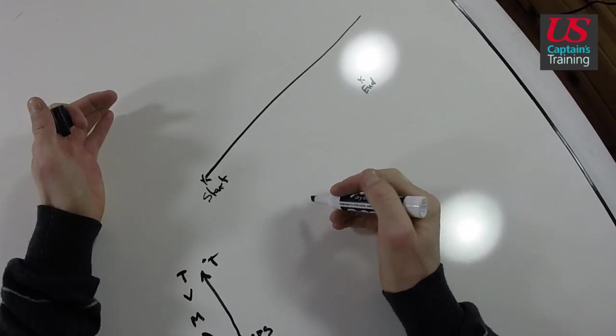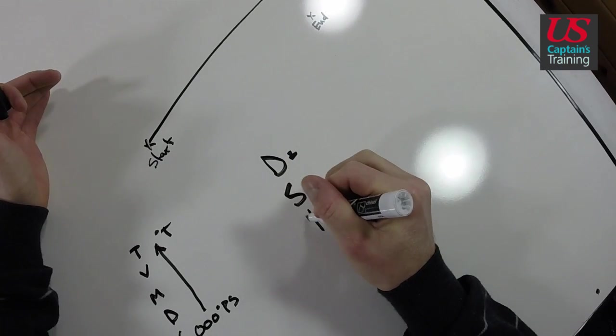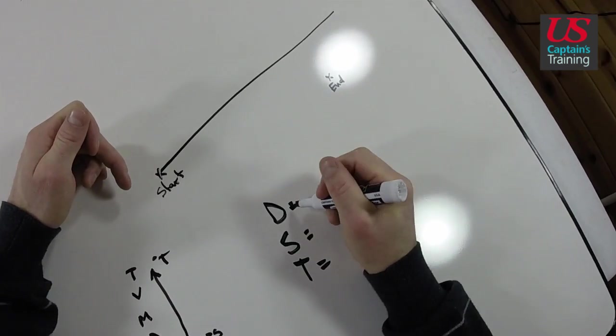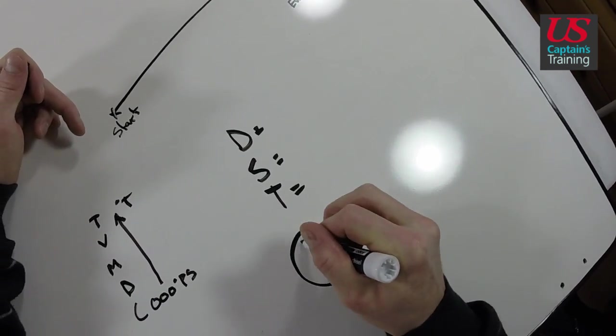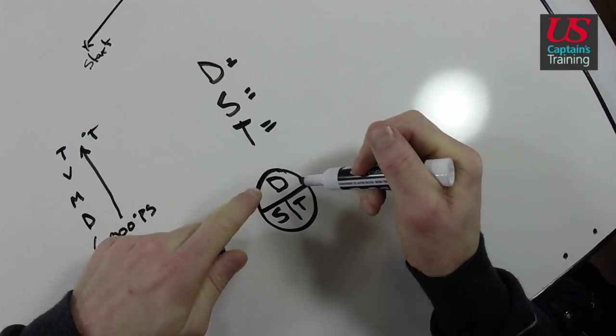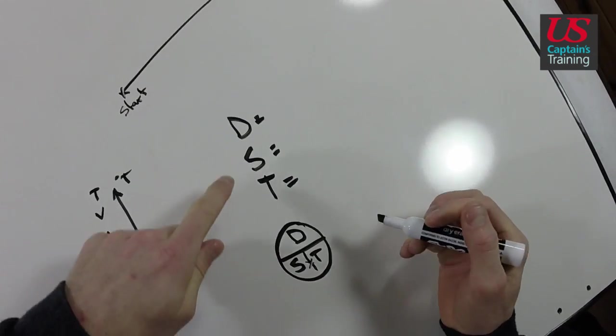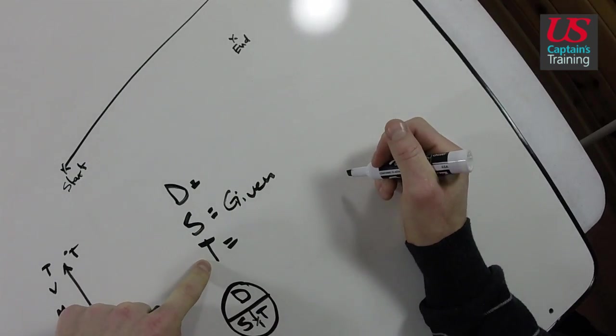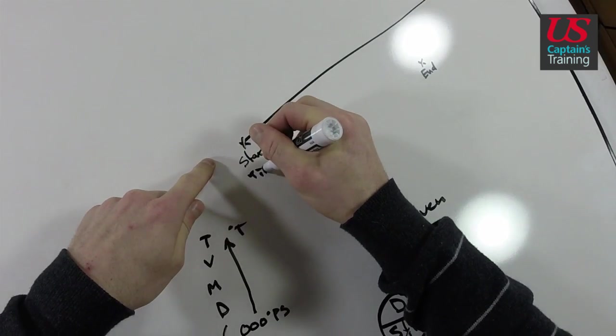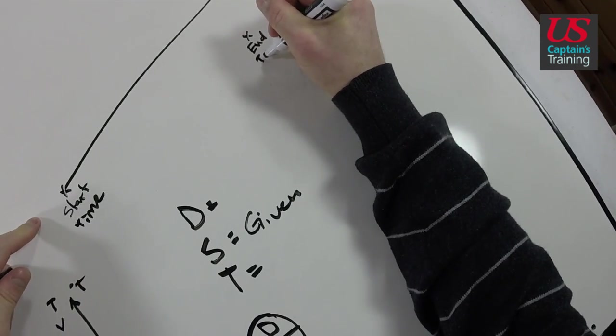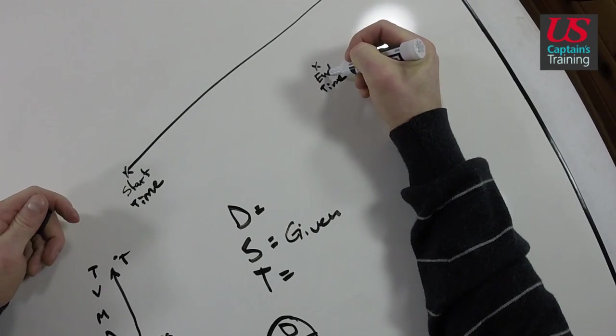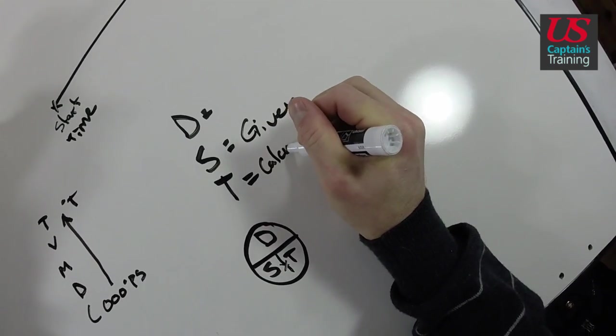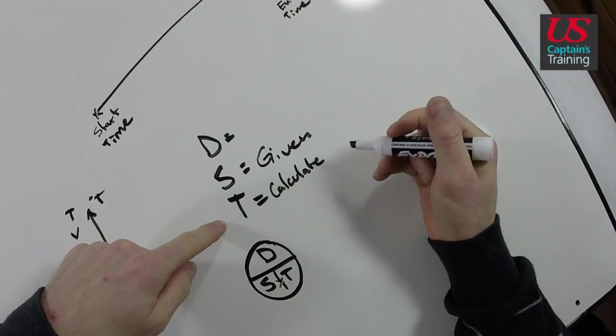Now it's just a little bit of math. We need distance, speed, and time. It wants to know how far up this course we traveled. With our memory aid, distance over speed and time, we know distance equals speed times time. Speed is given in the problem. The time is calculated from a start time and end time given in the problem, which we subtract to get the change in time.